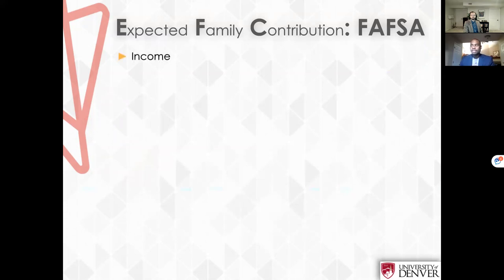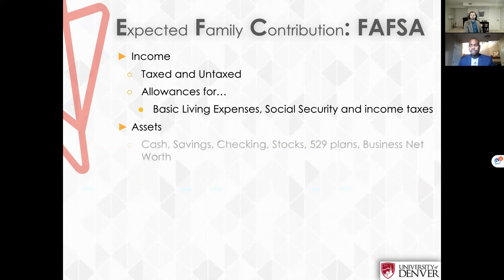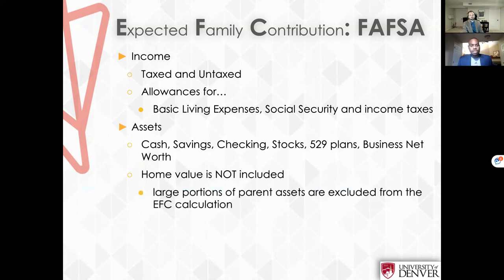How is the expected family contribution calculated through the FAFSA? It looks at your income, both taxed and untaxed, then provides allowances protecting funds for basic living expenses, social security, and income taxes. It looks at assets — what's in your savings and checking accounts, stocks, 529 plans, business ownership and value. Home value is not included for the FAFSA, so if you've already added home equity as an asset, go back and remove that. The application also excludes a large portion of assets and considers the size of your family and the number of dependent students you have in college.